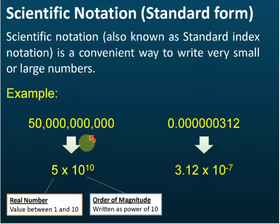For example, 50 billion - we can write it as 5 multiplied by 10 to the power of 10. This is a real number. There are two parts in this standard form: the real number and the order of magnitude. In physics you need to know how to change it.